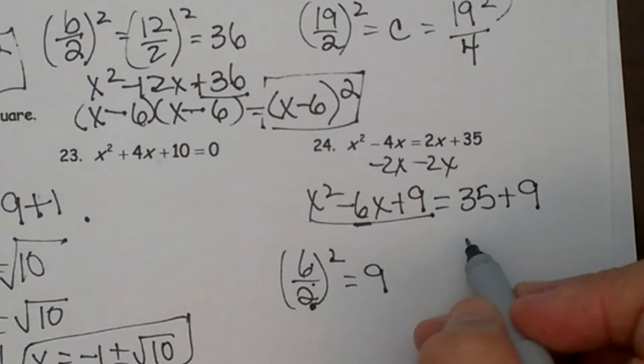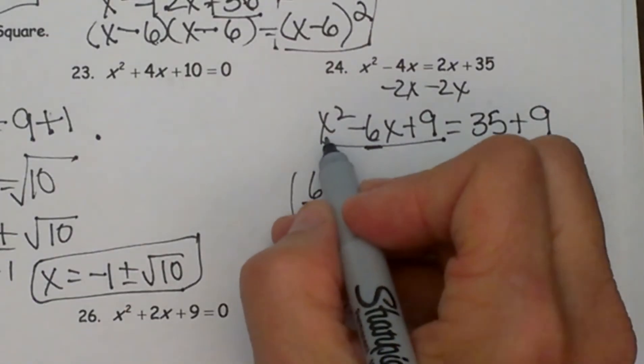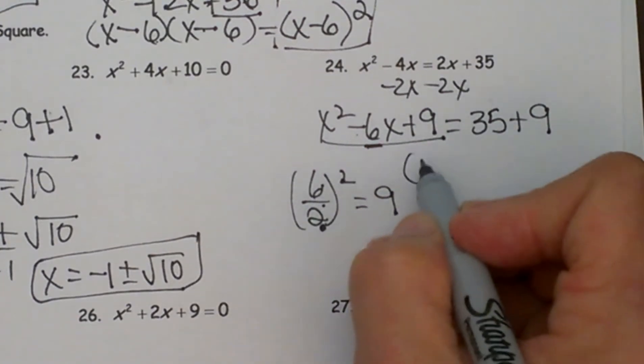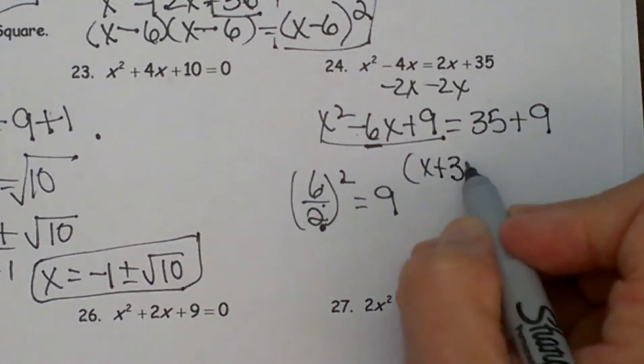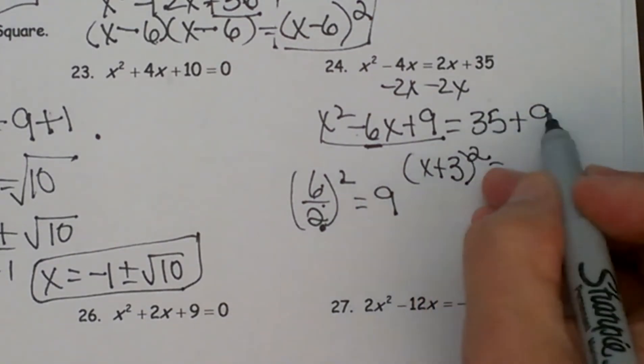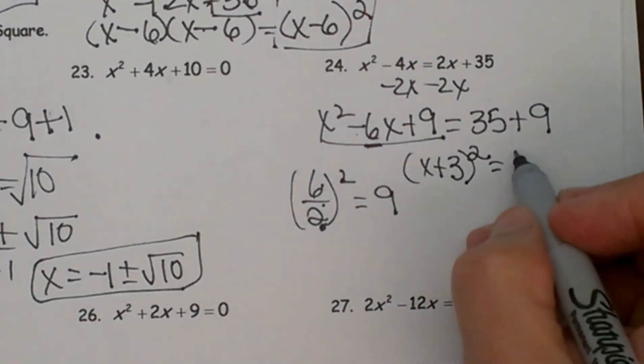What we have created on the left side is a perfect square. So x² minus 6x plus 9 factors into x plus 3 times x plus 3, or x plus 3 quantity squared is equal to, and then 35 plus 9 is 44.